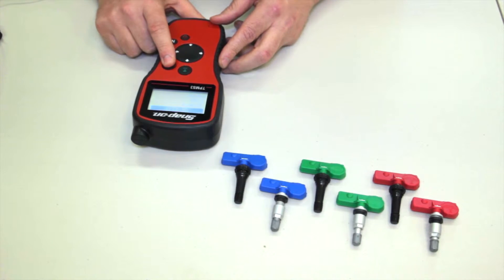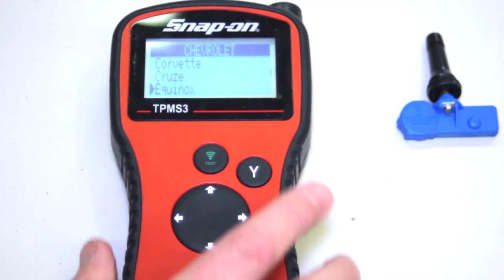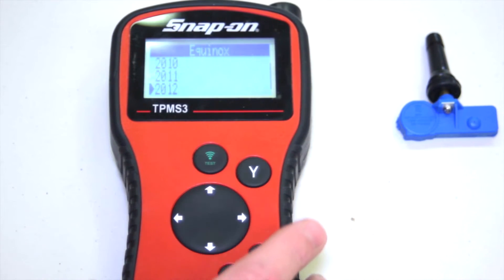Today we're going to select a Chevy Equinox model year 2012 and we're going to create a new sensor.